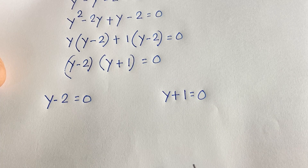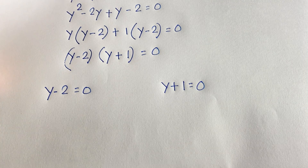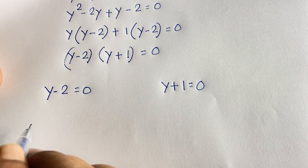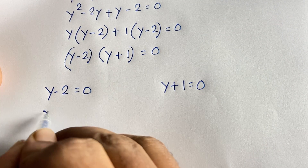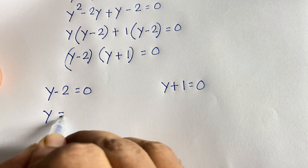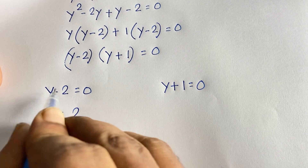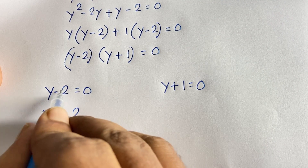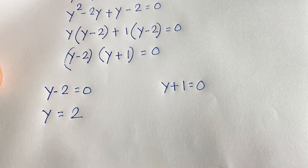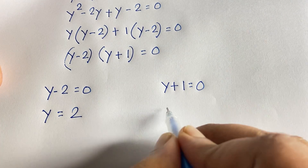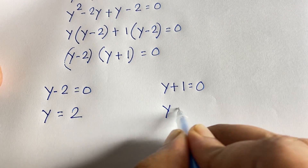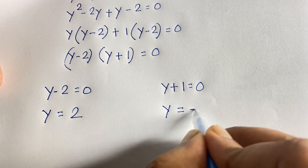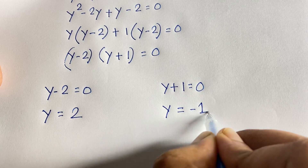From the first case, y is equal to 2 — moving the 2 to the right side gives positive 2. From the second case, y is equal to minus 1.